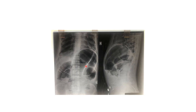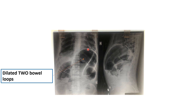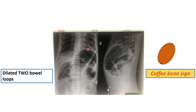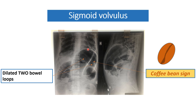This is a very classical X-ray. In this X-ray, you can see two dilated bowel loops with no haustra visible. These dilated loops are of sigmoid volvulus. Whenever there is such an abnormal radiological finding, we label it as the coffee bean sign, and it is characteristically seen in sigmoid volvulus.